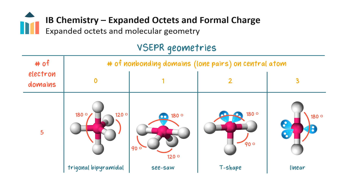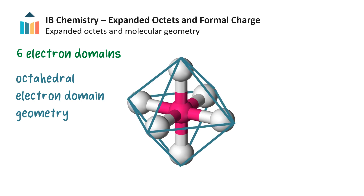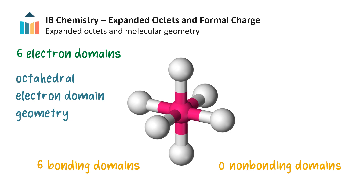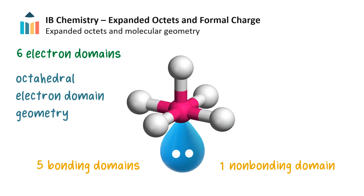Now let's investigate 6 electron domain molecules. Six electron domains will orientate themselves in an octahedral electron domain arrangement. Again, the molecular shape will depend on how many of these domains are bonding and how many are non-bonding — whether there are 6 bonding domains, 5 bonding and 1 non-bonding, or 4 bonding and 2 non-bonding.